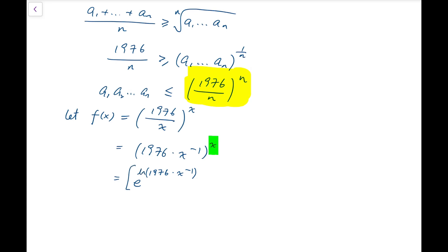This will become e to the power 1976 times x to the minus 1, whole thing to the natural log, and this thing to the power x. Finally, we will have e to the power x times log of 1976 minus natural log of x. This is our function.